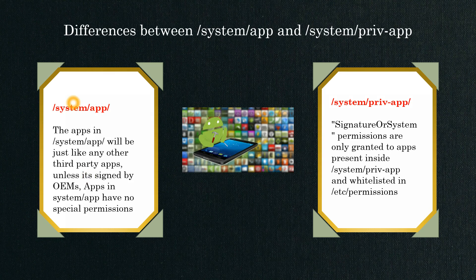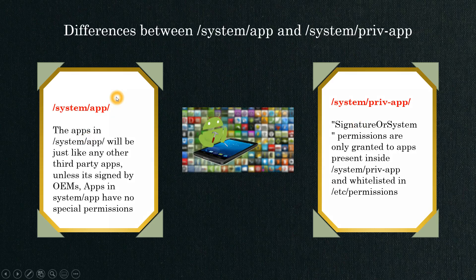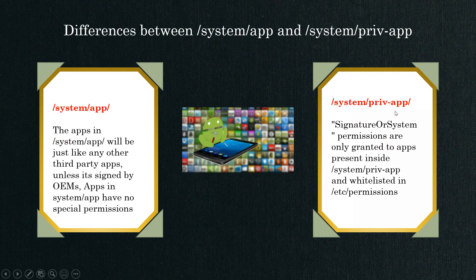Those special permissions will not be granted if you don't sign the app with your OEM keys. However, if you place any app in the system priv-app partition, the signature and system permissions will automatically be granted to those applications, and they will be whitelisted in the permissions folder. That's the major difference: apps in system app require OEM signing for special permissions, whereas apps in system priv-app get system permissions granted by default — such as permission to read/write external storage or enable Wi-Fi and internet access.